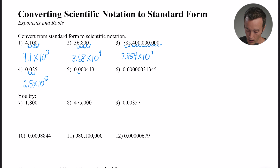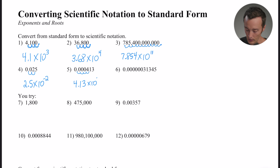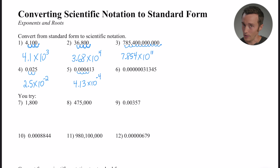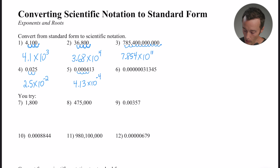Number five: glancing at it, the decimal will land between the four and the one to make 4.13. Counting the places: one, two, three, four places. It's a small number, so the exponent is negative four — 4.13 times 10 to the negative fourth. Number six is definitely going to have a negative exponent — it's a very, very small number less than one. That's a mental check to make sure you've got the right answer.